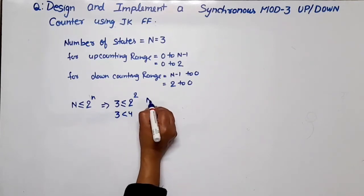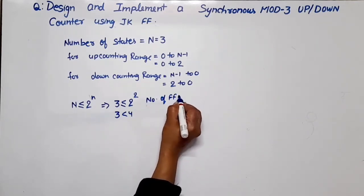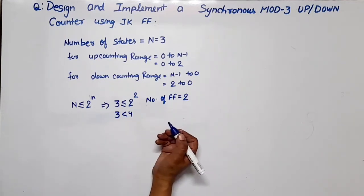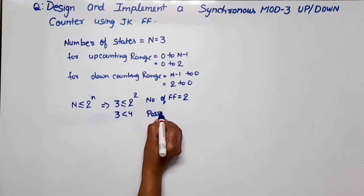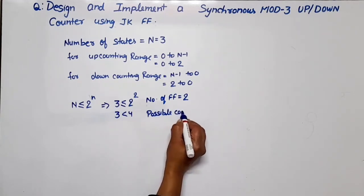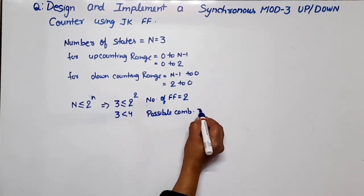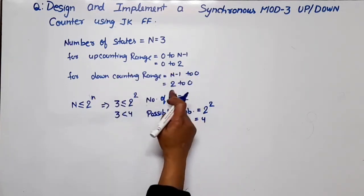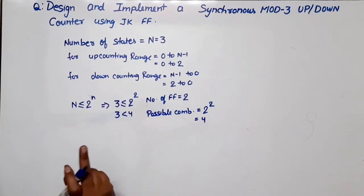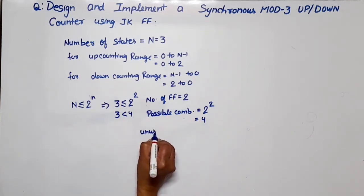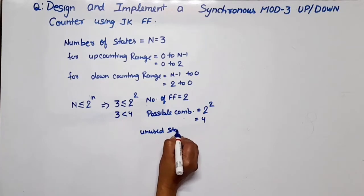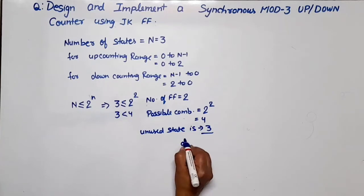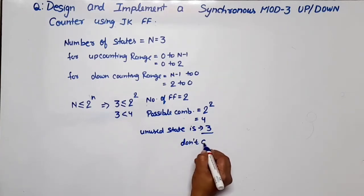Our condition is satisfied: 3 is less than 4, so the number of flip-flops is equal to 2. With 2 flip-flops, the number of possible combinations is 2 raised to power 2, which equals 4. But this counter only counts 0 to 2 and 2 to 0, so state 3 is an unused state. We consider it as a don't care.